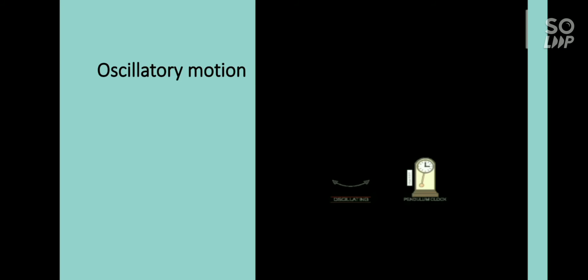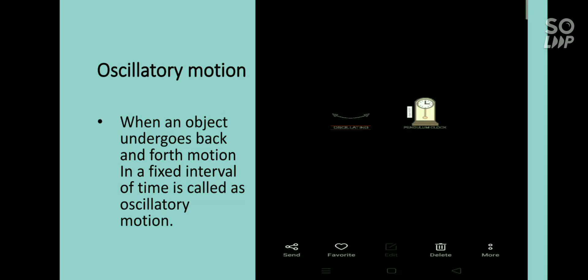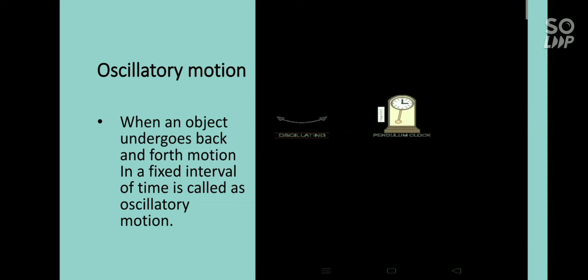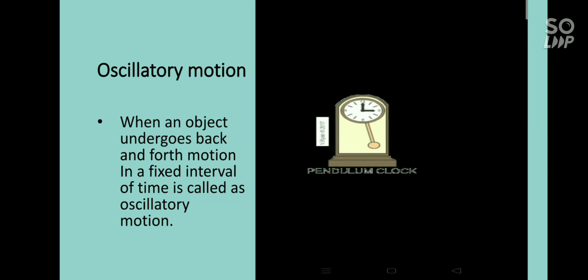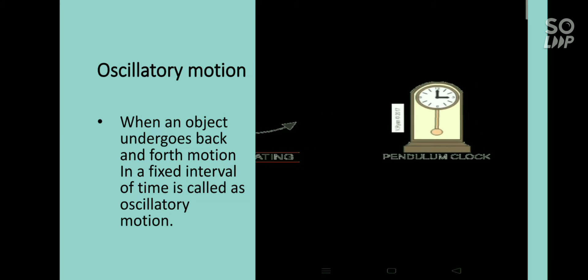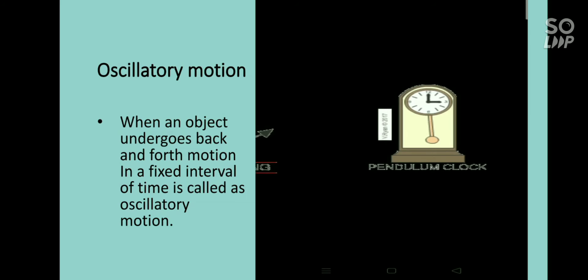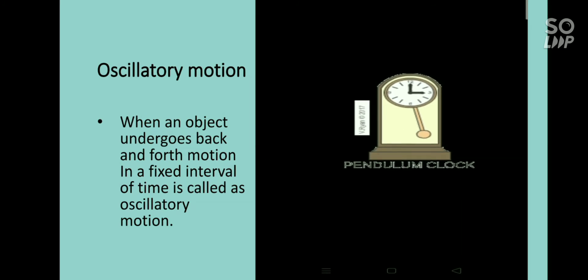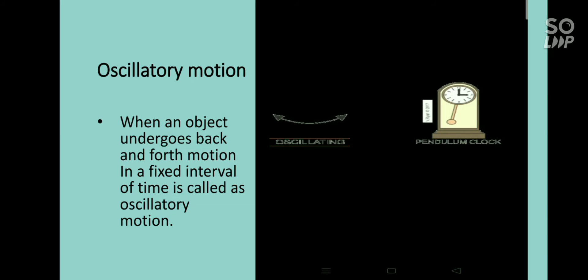Next is oscillatory motion. Any to-and-fro motion is called oscillatory motion. Look at this video — in a pendulum clock, the pendulum moves to and fro, going one side and coming back repeatedly. Another example is a swing: it goes forward and backward continuously, which is also an example of oscillatory motion.